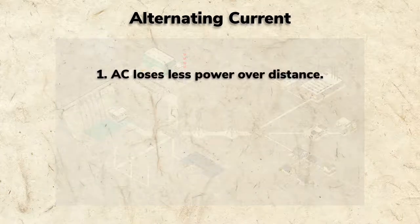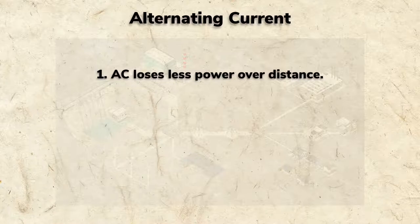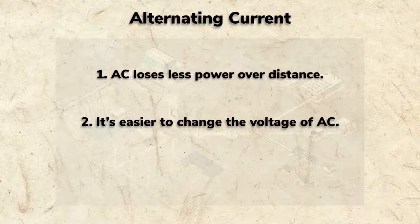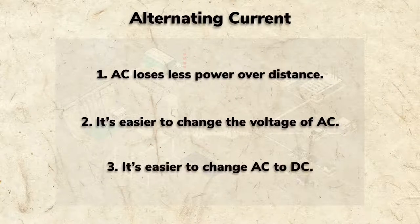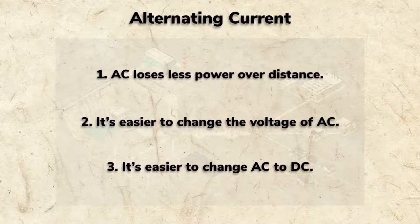AC is used for household wiring for a few reasons. AC can be transmitted over long distances with less power loss than DC. AC voltage can be easily increased or decreased with transformers. And it's easy to change AC to DC, making AC more versatile.